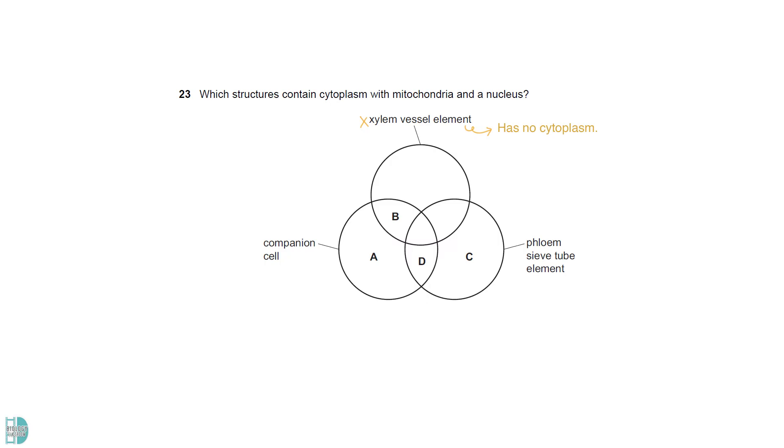A xylem vessel has no cytoplasm at all. A phloem sieve element has no nucleus. Only companion cell has the organelles stated.